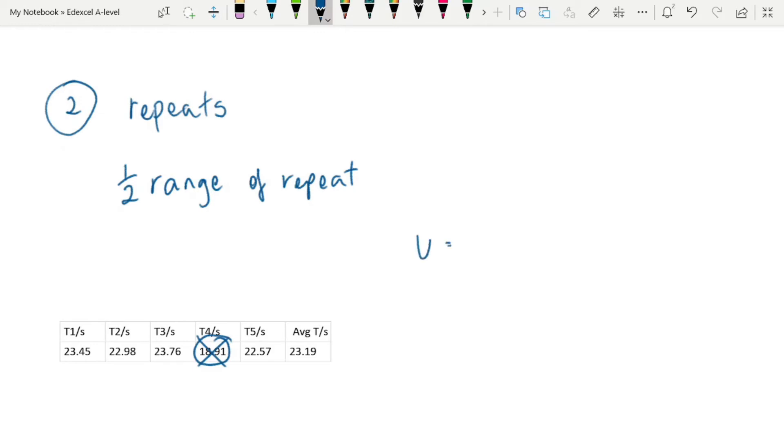So our uncertainty here is going to be half the range. And that means it's 23.76 minus 22.57, which gives us a range of 1.19 seconds. Dividing that by 2 gives us an uncertainty of 0.595.